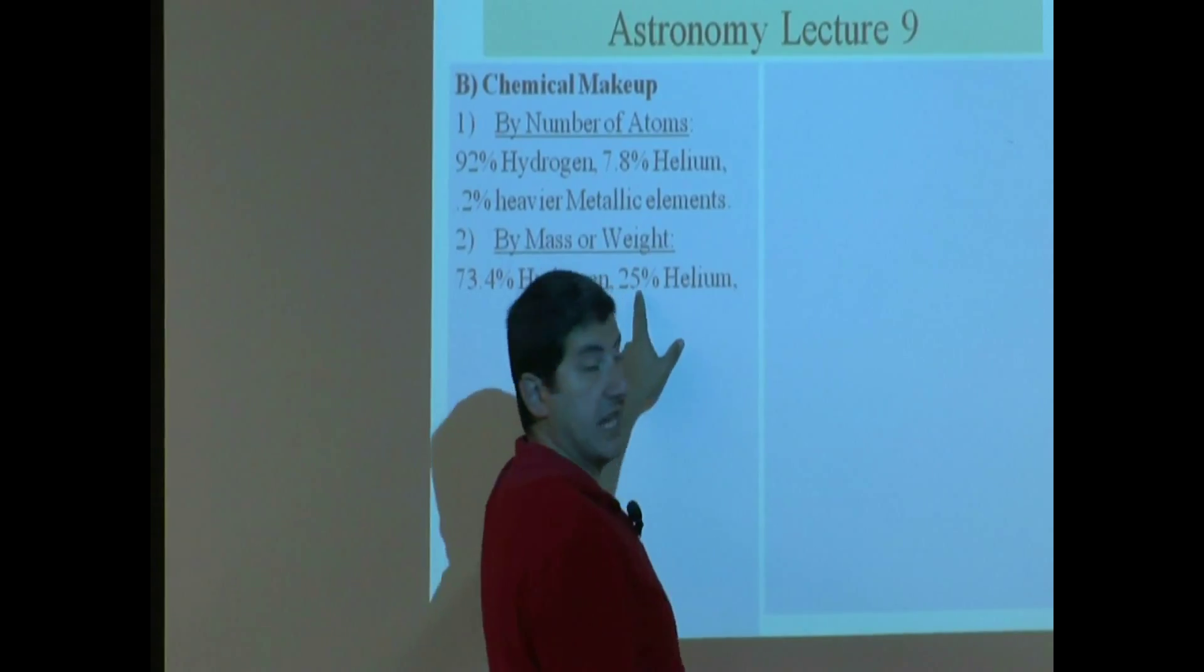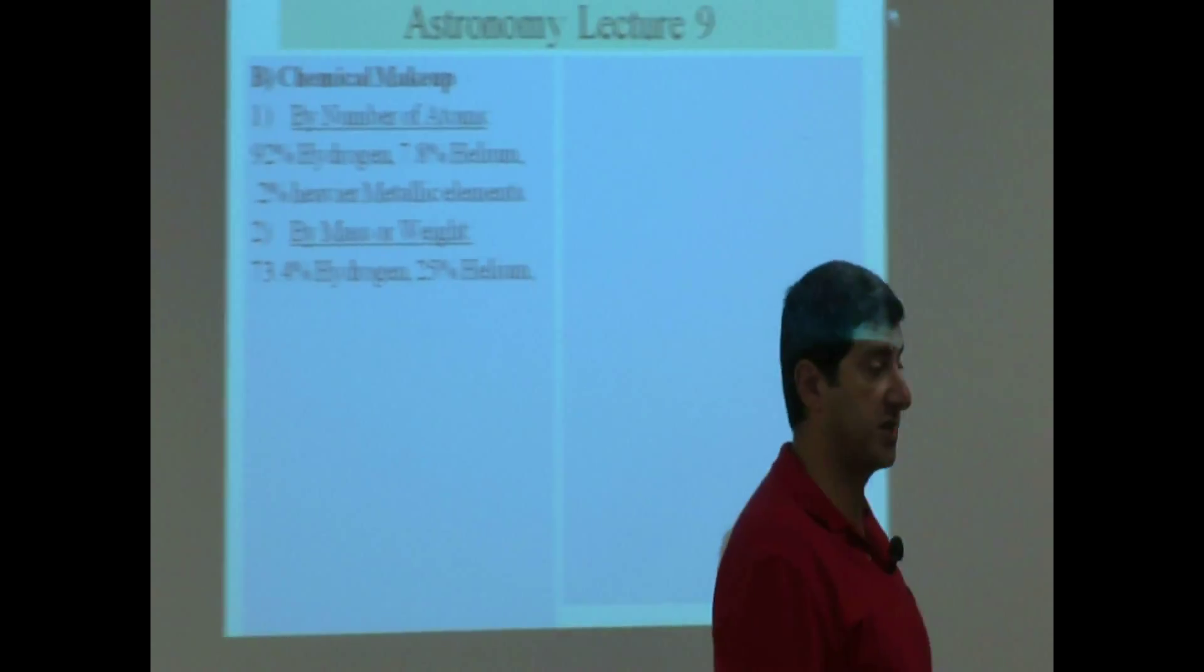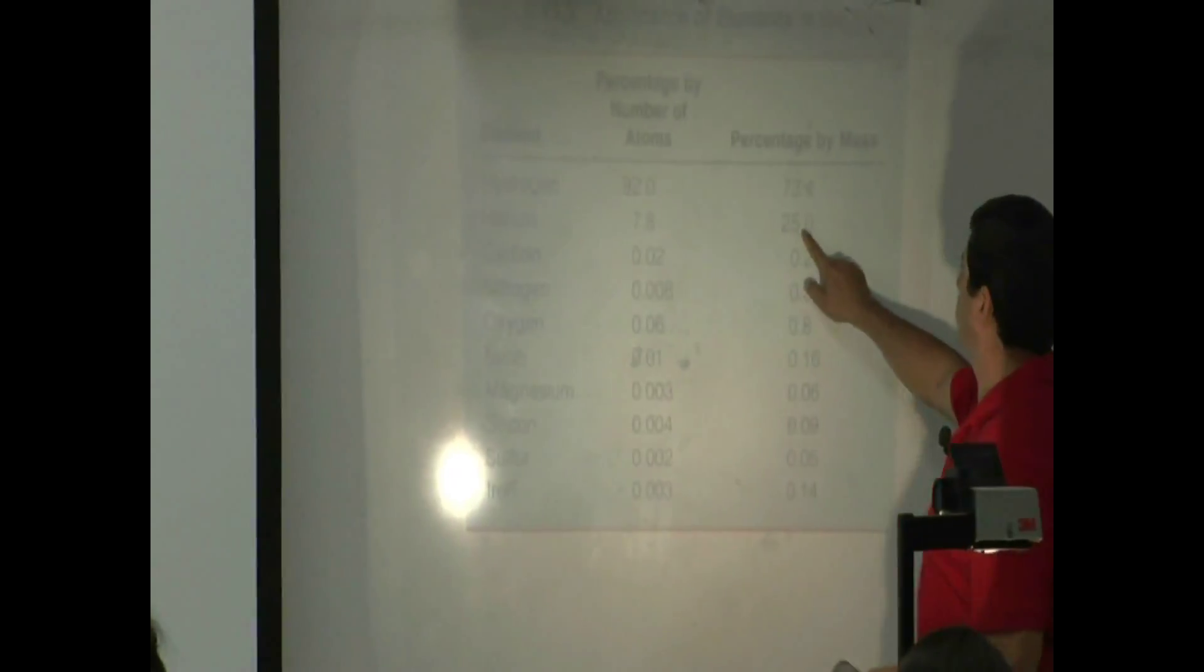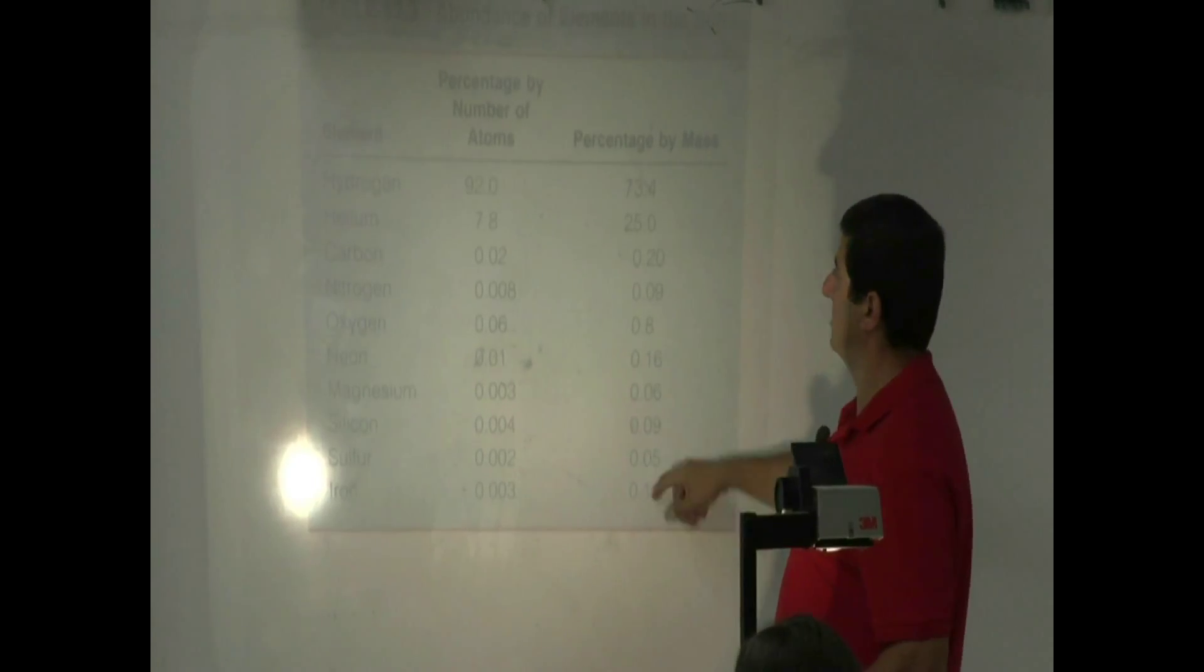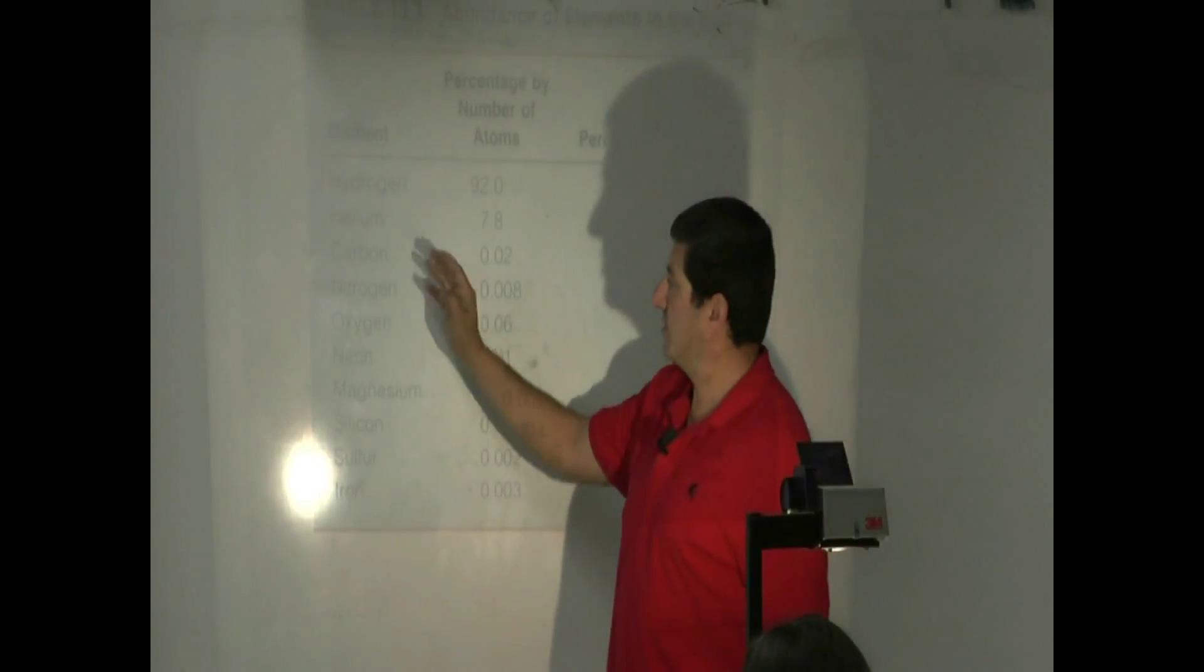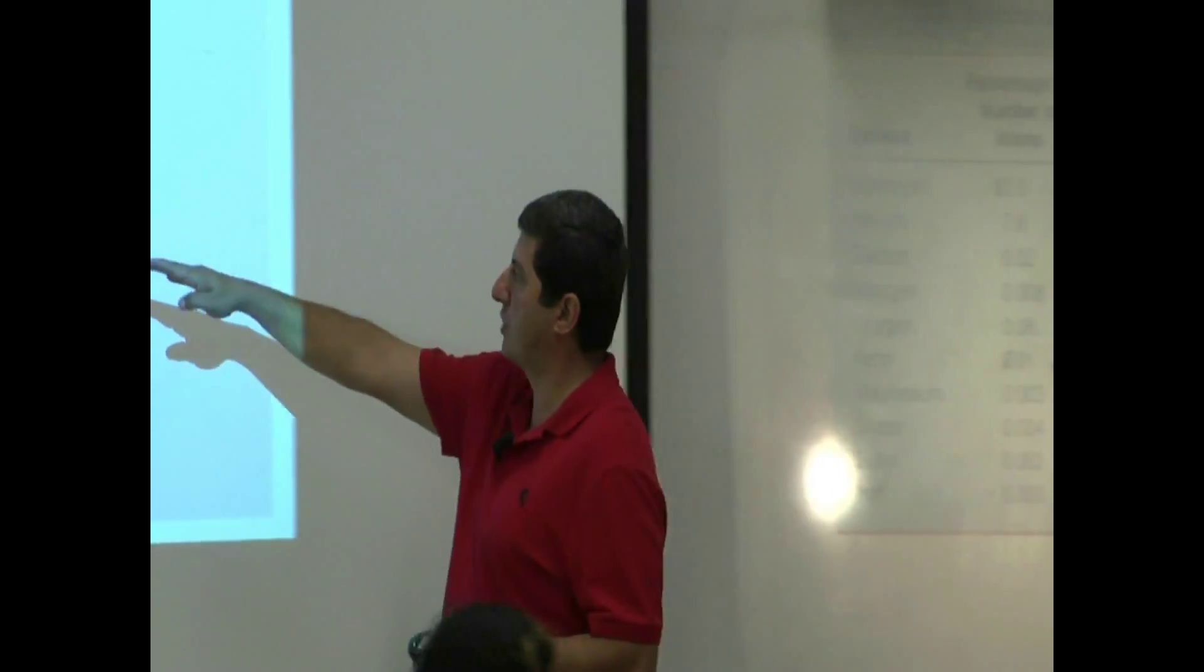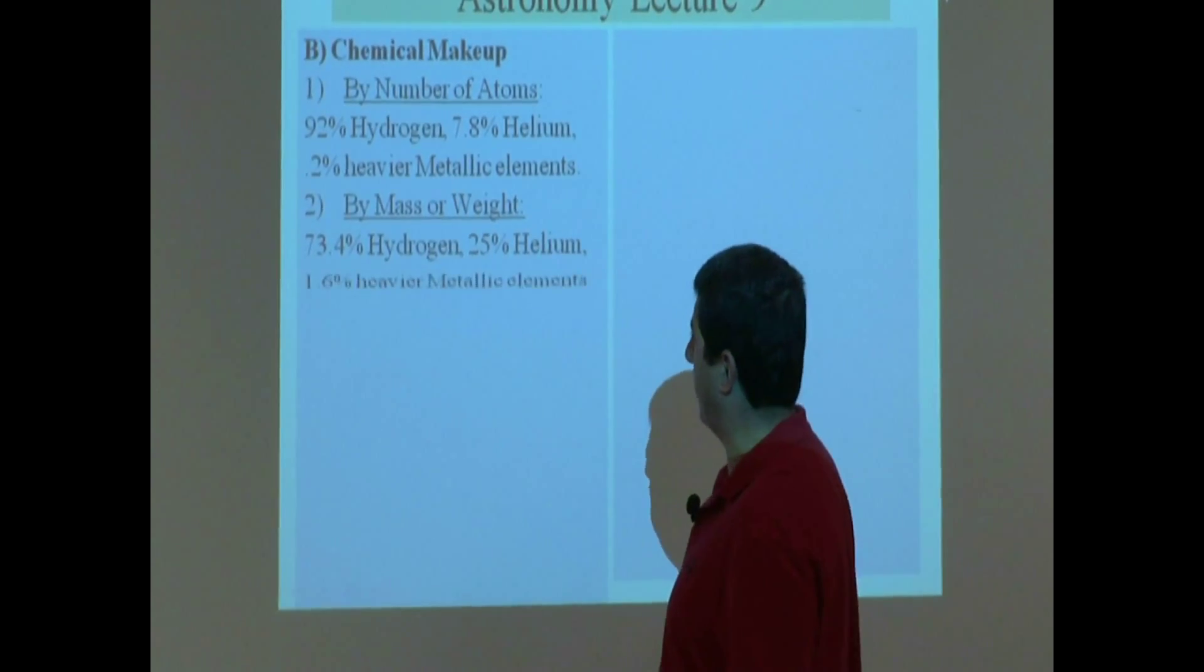The helium is heavier than hydrogen, so it comprises 25% of the weight of the sun. You see? So 73%, 25%. And then all these other metallic substances, carbon, nitrogen, oxygen, all of those, they comprise the rest by weight. So you see, the percentages drop when you go from number of atoms to percentage by weight.